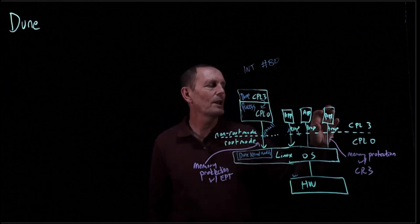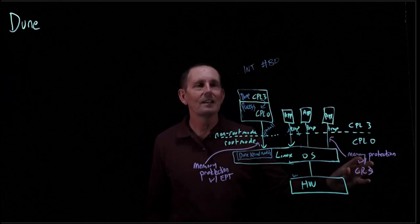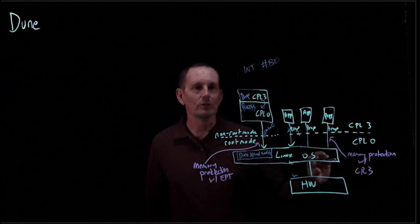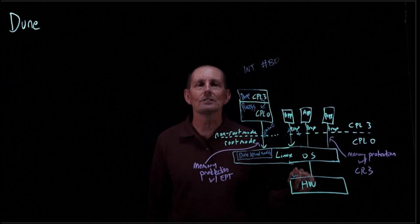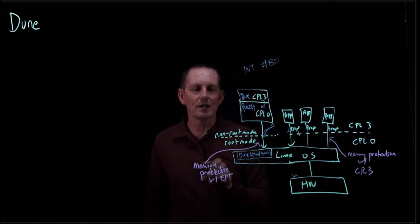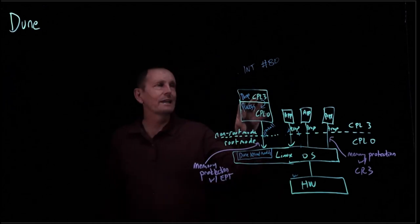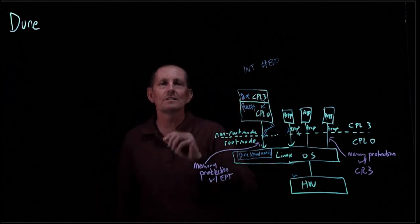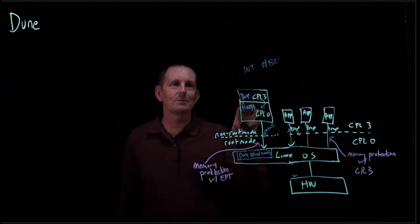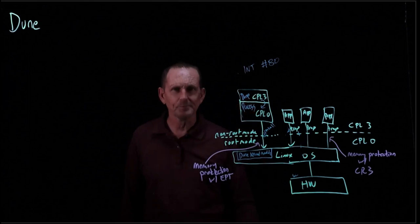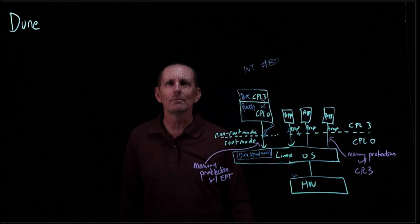The way we configure normal processes is by setting up a page table, rather a page directory, a bunch of page tables for that process, and those all refer to some specific physical pages. Here, for the DUNE process, we're going to set up EPT instead. We can have multiple DUNE processes, that's fine. In fact, it's even possible to have multiple DUNE threads within a process. We're going to look in a moment and see why this is important, what we can do with this.